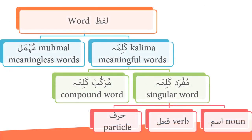Word — laf' — is divided into two: number one, kalima (meaningful word), and number two, muhamal (meaningless word). Kalima is further divided into mufrid kalima (singular word) and murakab kalima (compound word). Mufrid kalima is further divided into noun (ism), verb (fi'l), and particle (harf).